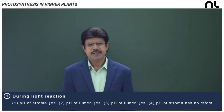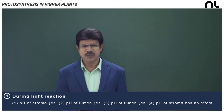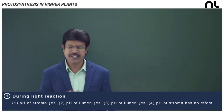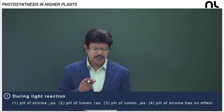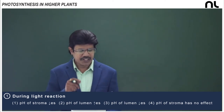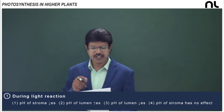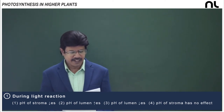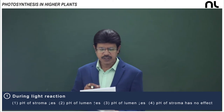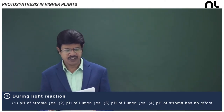Welcome to Neatlogin. The interlinked conceptual question in plant physiology — photosynthesis. The question is: during light reaction, the first option is pH of the stroma decreases; second option, pH of the lumen increases; third option, pH of the lumen decreases; fourth option, pH of the stroma has no effect.